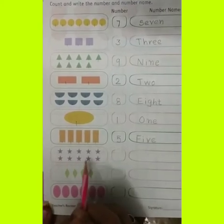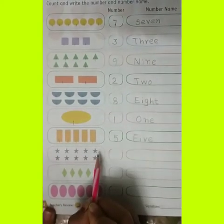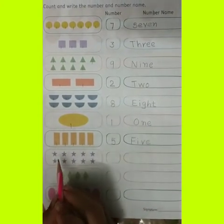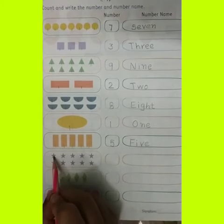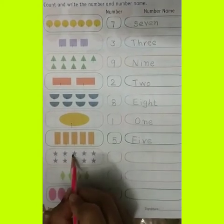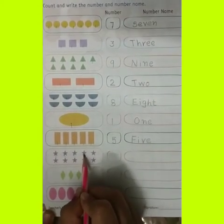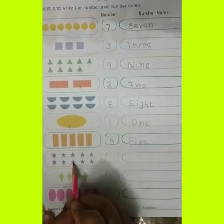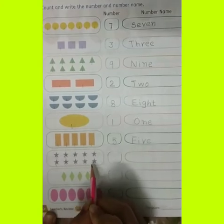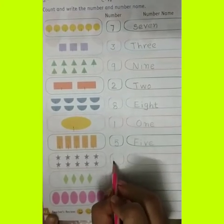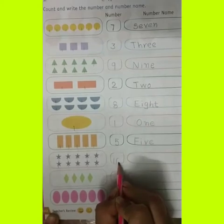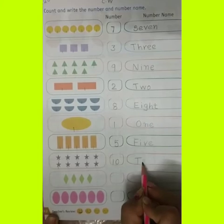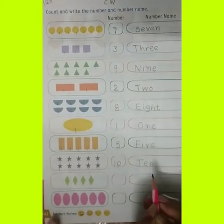Which shape is this? Star! Twinkle, twinkle, little star. Let's count: 1, 2, 3, 4, 5, 6, 7, 8, 9, 10. So you can write down here number 10. Write down the spelling of 10: T, E, N — 10.